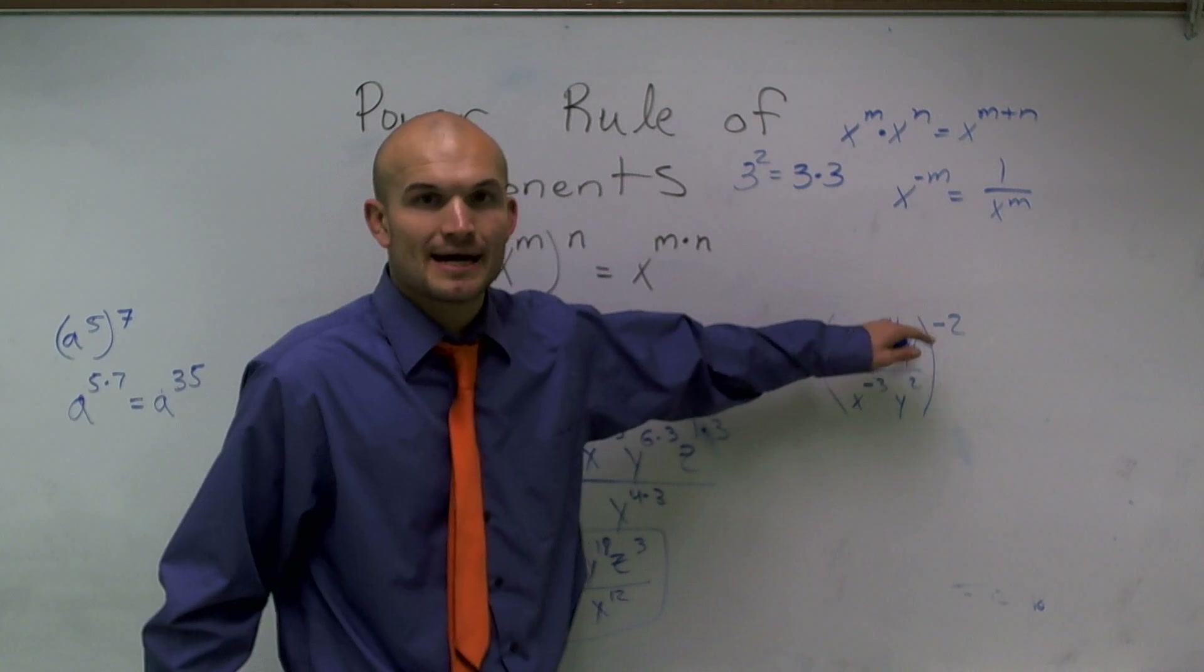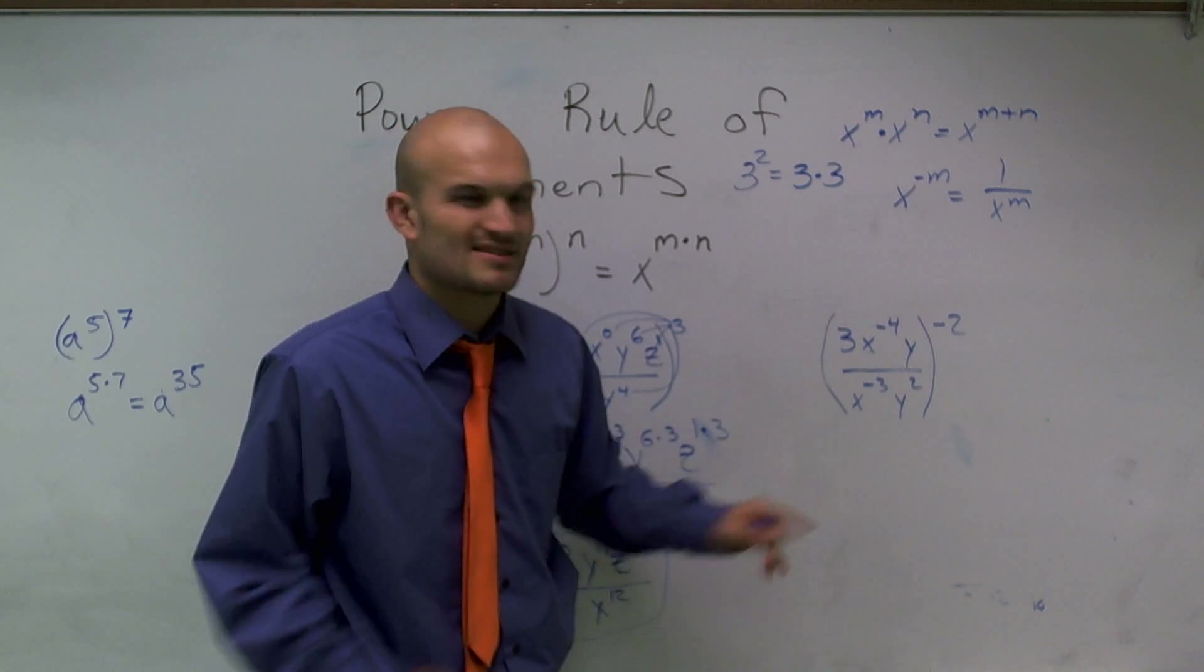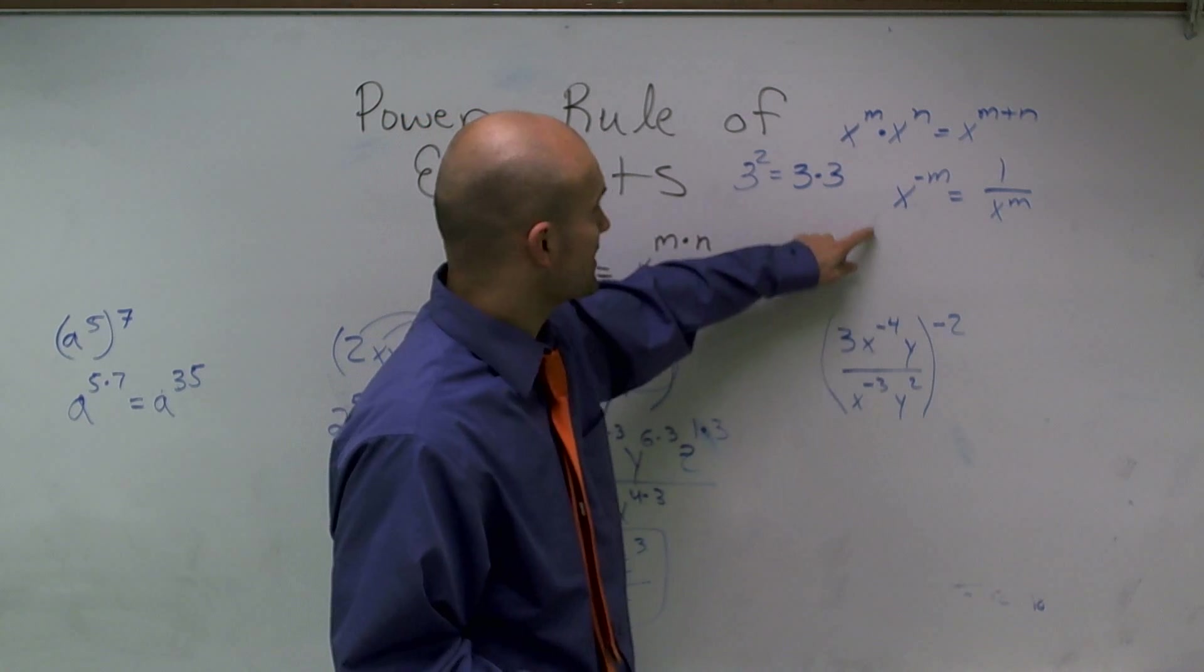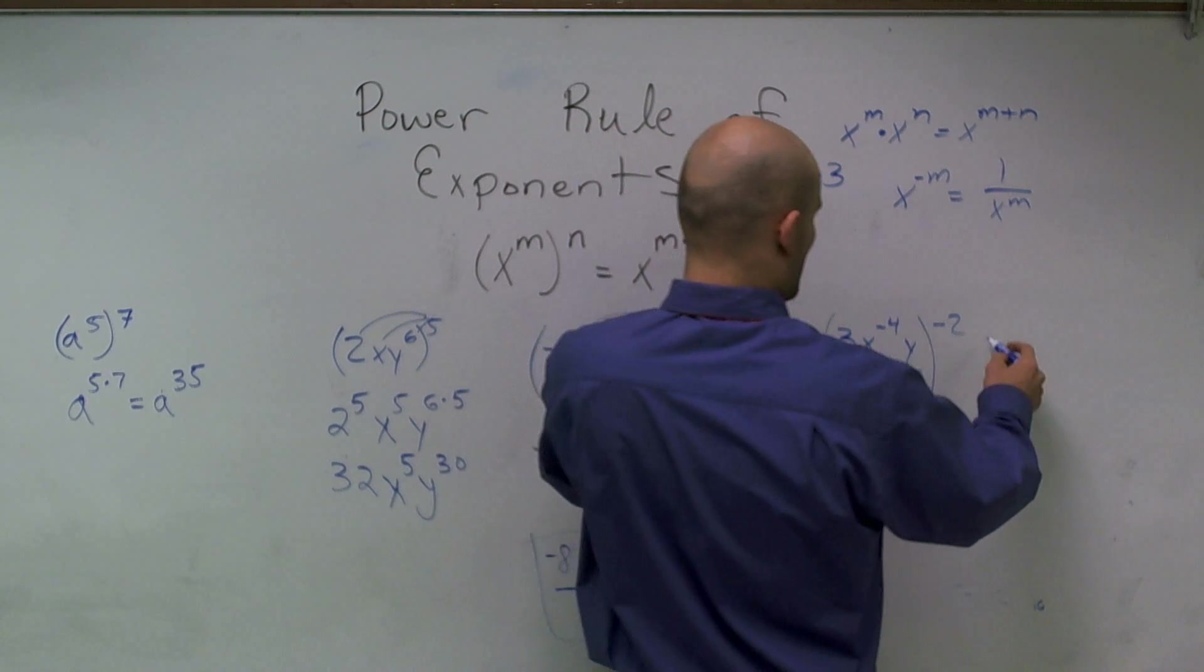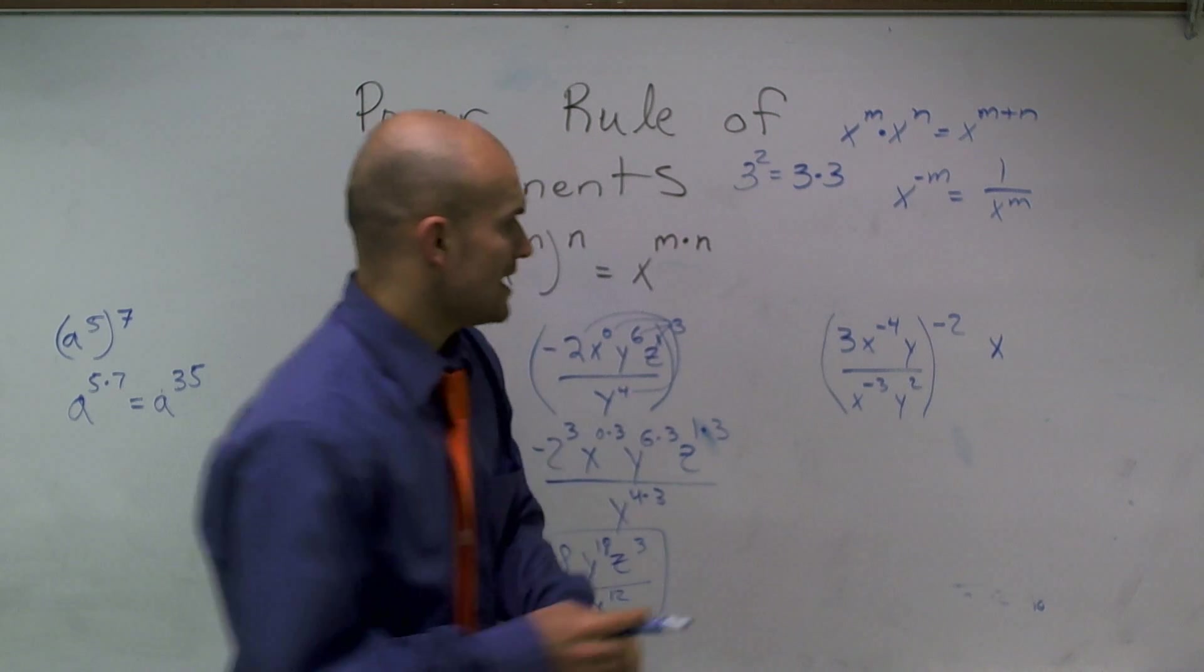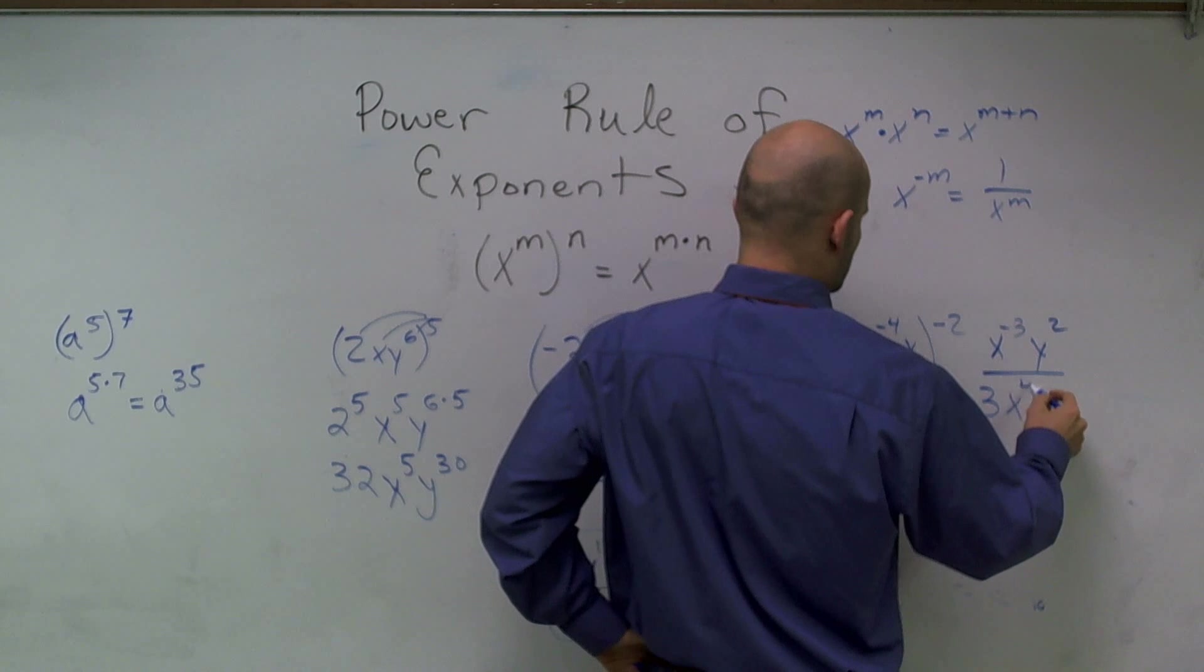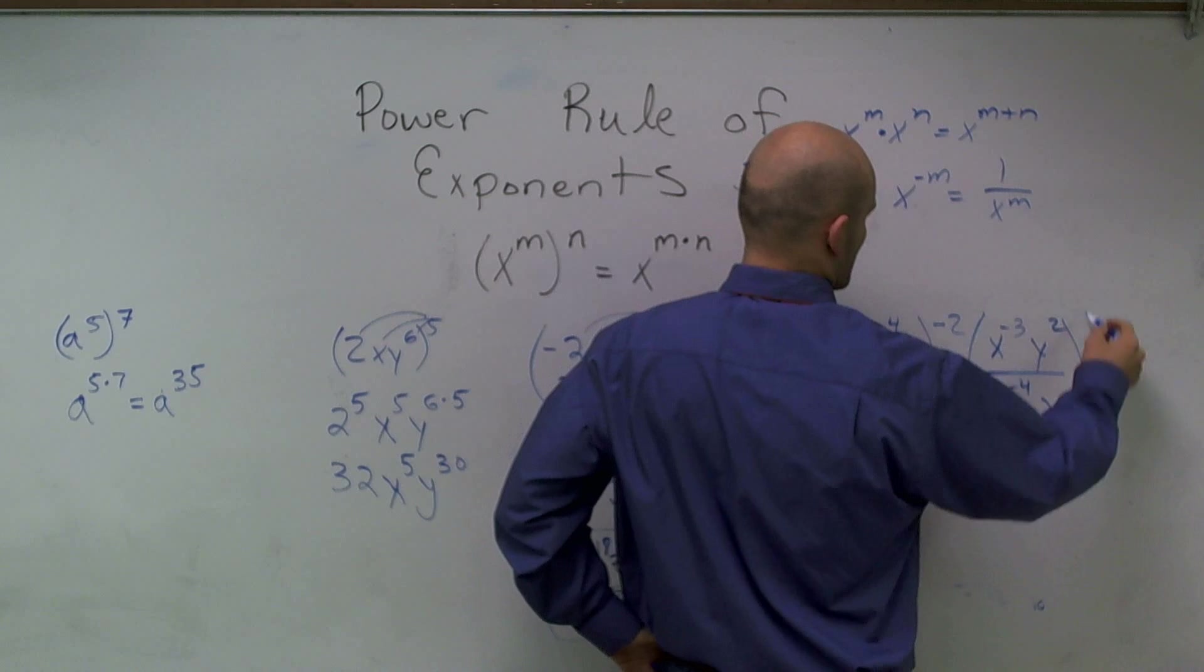Now, I showed you last time, you can just distribute this negative 2 to all these powers, and that's perfectly fine. Here's another way. Let's write this with a positive exponent. So to write this with a positive exponent, what I can do is I can use the reciprocal of this fraction and write it as the positive. So therefore, I can say 3x to the negative 4, y squared, all over x to the negative 3, y squared.